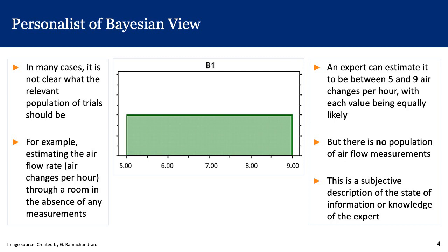In contrast, there is a personalist or Bayesian view of probability. Here it's not very clear what the relevant population of trials should be. The example I like to give is betting on a horse in a horse race — there is no population of horse races that are exactly identical. If you wanted to bet on horse A, you are essentially going with your gut feeling. There is nothing you can measure to tell you the probability of that horse winning. The person next to you might bet on horse B with equal confidence. So here, probability is essentially a description of your state of knowledge or state of mind.